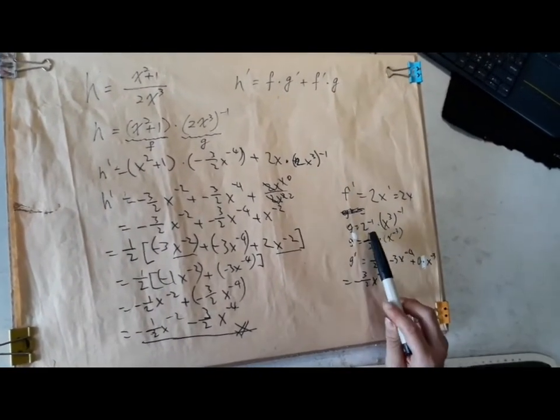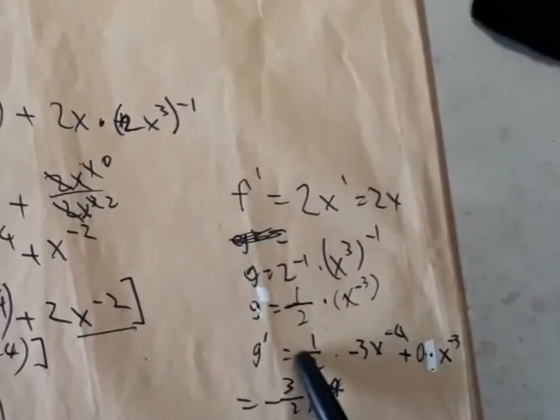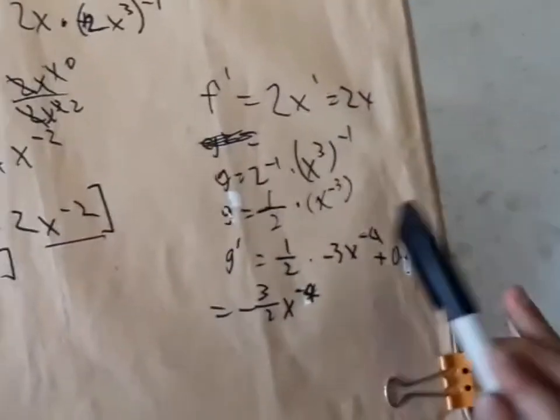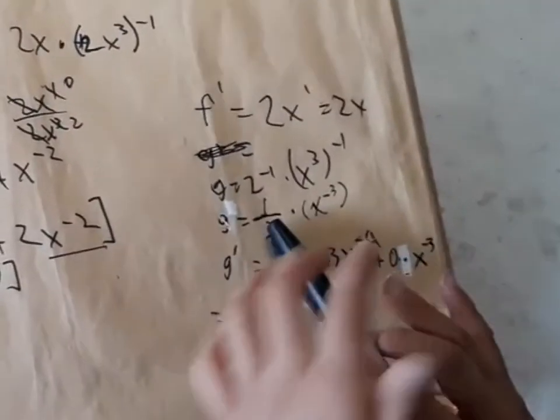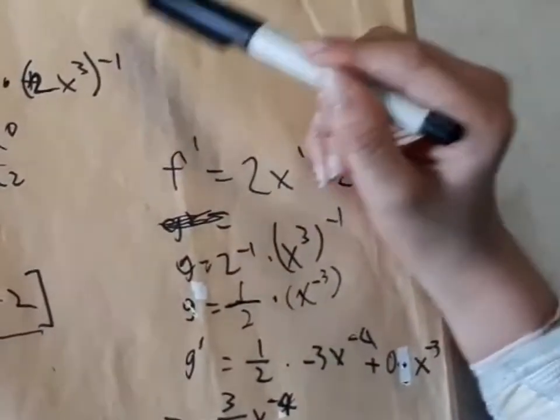So if you write g, you can actually write as 2 to the negative 1 times x cubed to the negative 1. And I'll write the derivative. So let's think that this one is f and this one is g. And then we're going to use our original link.